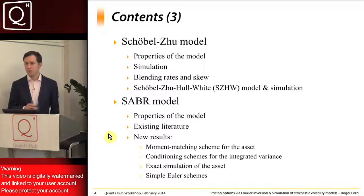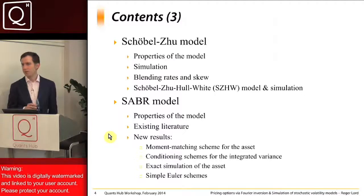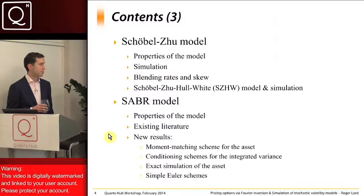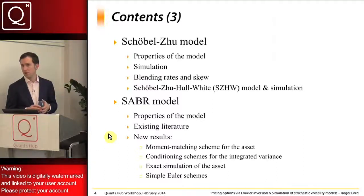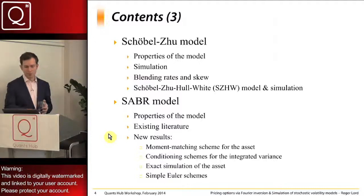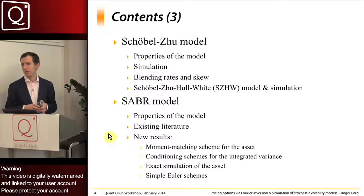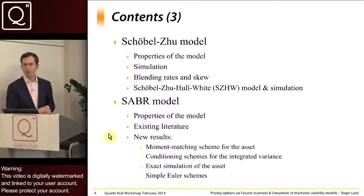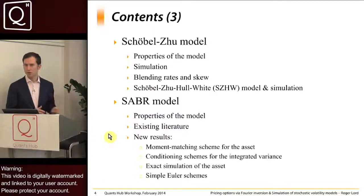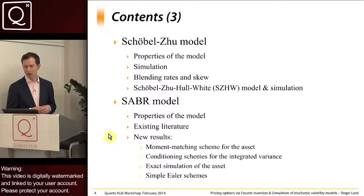Using recent results from Makarov and Glew on simulation of squared Bessel processes, we can achieve an exact simulation of the asset. Combined with conditioning schemes for the integrated variance, this gives an almost exact scheme. I'll also end with simpler Euler schemes, because when coding something up quickly you often just want a simple scheme you can implement in five minutes to get a quick answer.